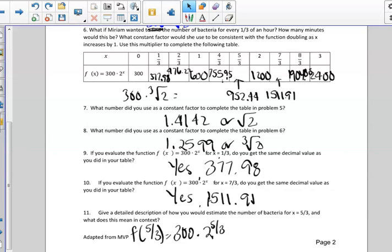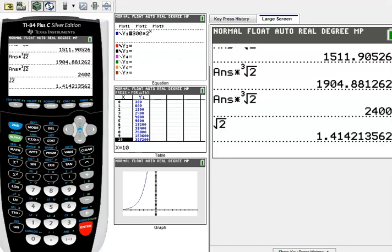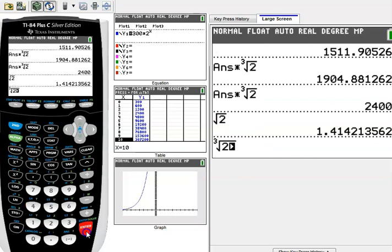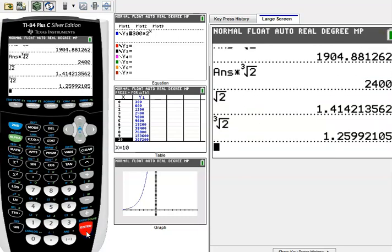what was our constant factor in problem six, and that was 1.2599, or the cube root of two, which if we also try and compare the cube root of two, I can do math, number four, and the cube root of two, and that would be 1.2599.